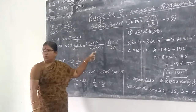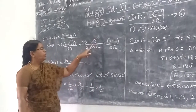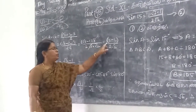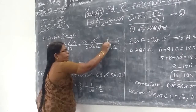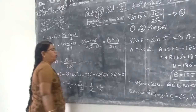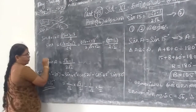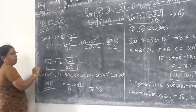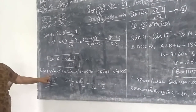Root 3 into root 2, so root 3 root 3 can apply, meaning root 3 minus 1 by 2 root 2. So we want the value: sin A equal to root 3 minus 1 by 2 root 2.